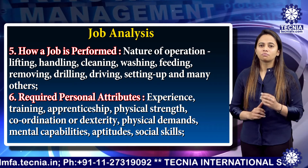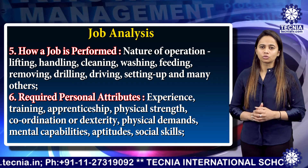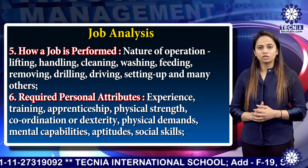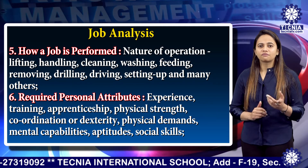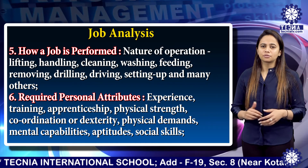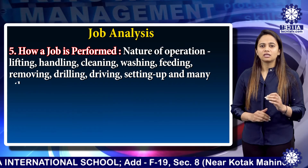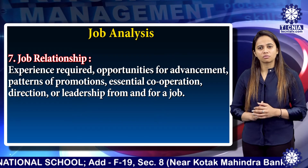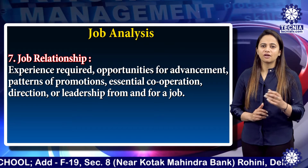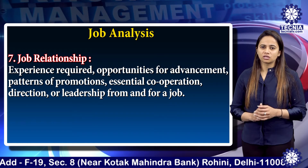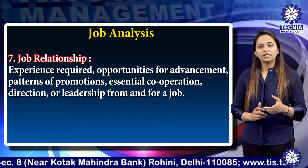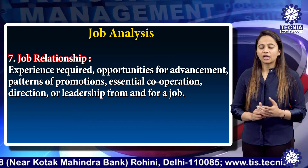Number six, required personal attributes — experience, training, physical strength, coordination or physical demands, mental capabilities, aptitude and social skills. Number seven, job relationship — experience required, opportunities for advancement, pattern of promotion, essential cooperation, direction or leadership form and for a job.